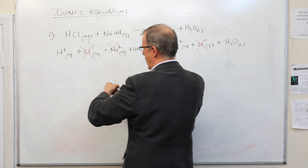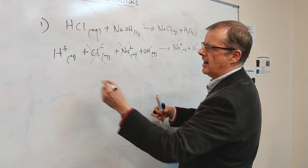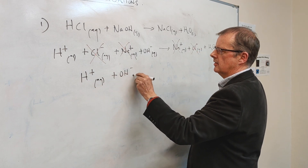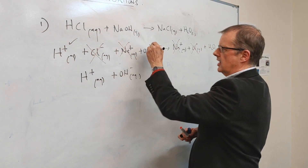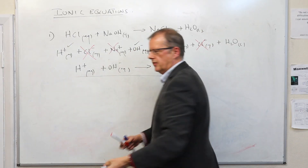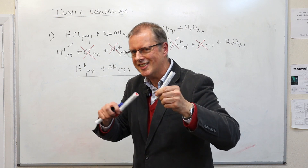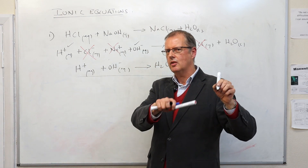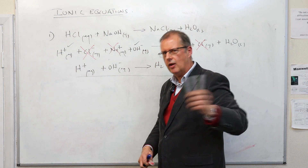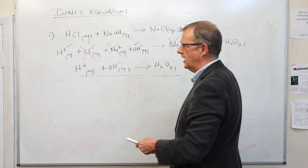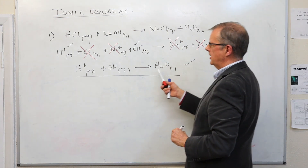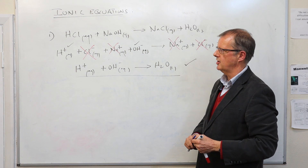Now we're down to the essential chemistry. What has actually reacted? Hydrogen ions have reacted with hydroxide ions — this has reacted with that to form a molecule of water. So we've stripped the equation down to the essential chemistry: what reacted with what? The rest of it was bits of furniture which haven't done anything, and we get rid of those because they're not part of the actual chemical reaction. This is the ionic equation for the neutralization.